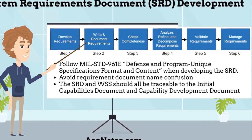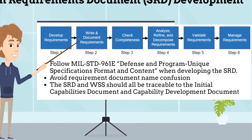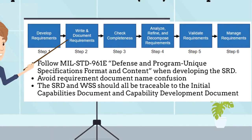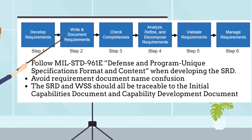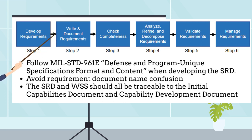The steps in developing an SRD are the same as any other requirement document. There are six steps in the development of requirements. You can learn more about these steps by visiting the Requirements Development Steps webpage within ACT Notes. A few tips to developing an SRD: follow MIL-STD-961E, titled Defense and Program Unique Specifications Format and Content, when developing the SRD. A contractor may build an internal document for managing the traceability of their requirements.